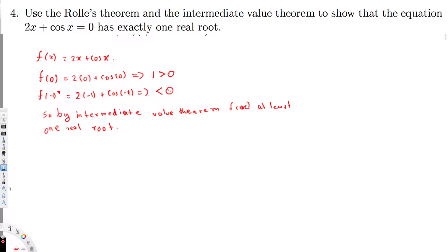This shows at least one real root, but there might be more than one. To check, we apply Rolle's Theorem. Before applying it, the function must satisfy three conditions. First, it must be continuous. Since f(x) = 2x + cos x has a domain of all real numbers, this function is continuous on any interval.